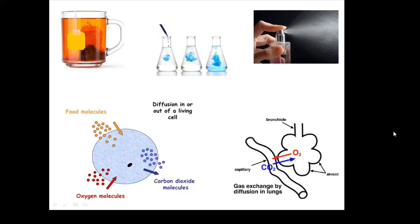In your lungs as well, oxygen diffuses into your blood from the alveoli. Carbon dioxide diffuses out of your blood. So gas exchange by diffusion in the lungs.